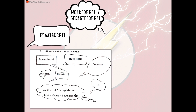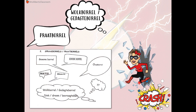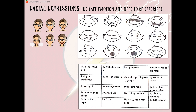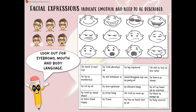You get different types of bubbles. That will tell you whether they are thinking, whether they are talking, or whether they are shouting. Make sure that you know exactly what type of bubble it is. Remember, bubbles are 'borrels' in Afrikaans. Facial expressions — you have to indicate the emotion and it needs to be described. When you look at facial expressions, it's always going to be something about eyebrows, your mouth, and body language. So learn the words in Afrikaans.